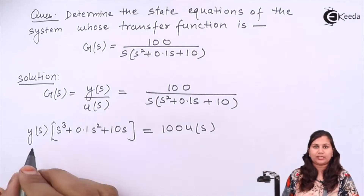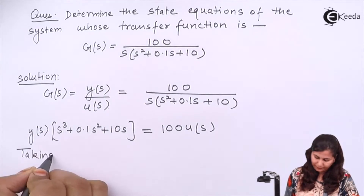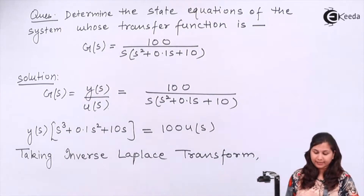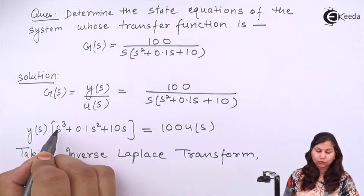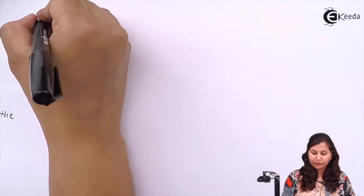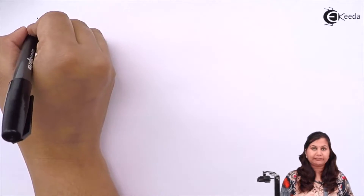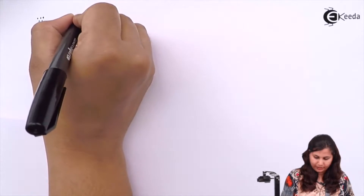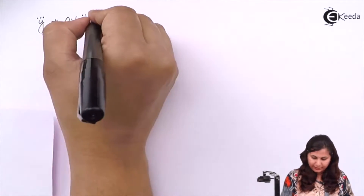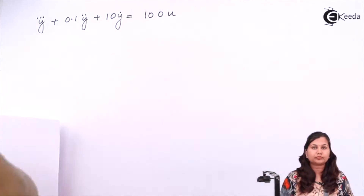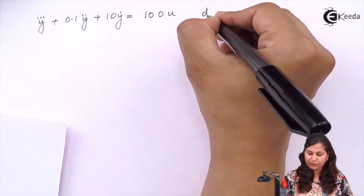Now taking the inverse Laplace transform of this equation, s³ becomes the third derivative, so we get ÿ̇ + 0.1ÿ + 10ẏ = 100u. This becomes the differential equation of the system.